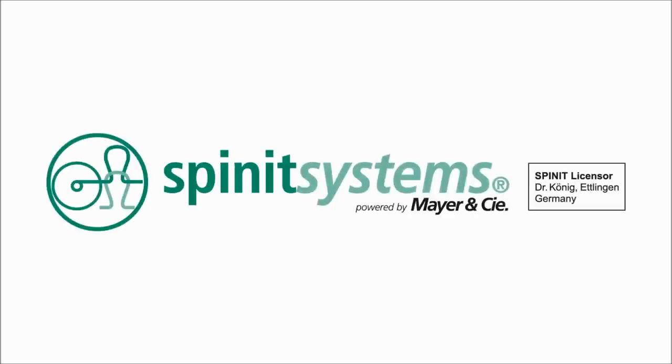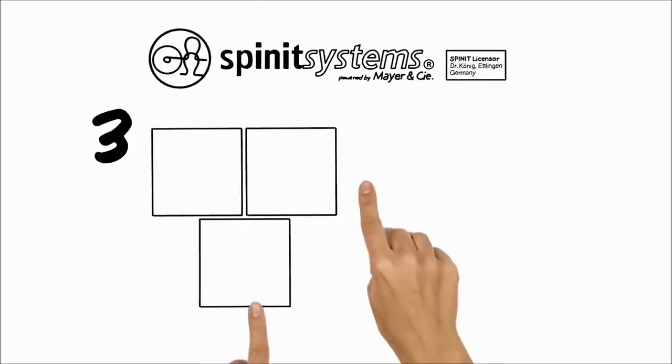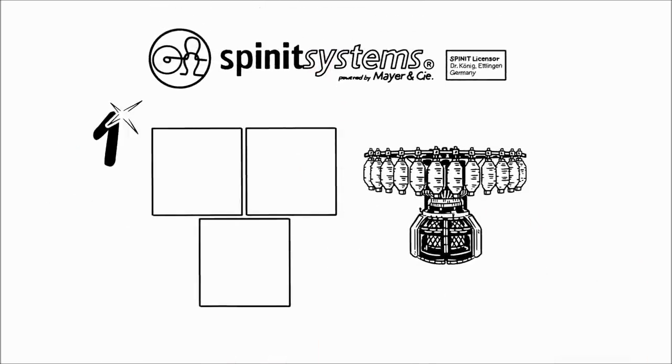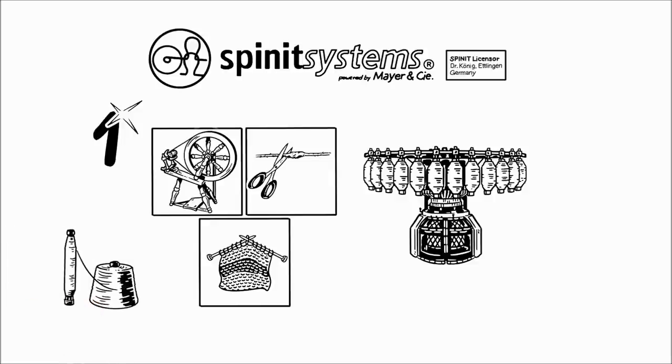We explain Spinet Systems, genuine innovation for the textile industry. Spinet Systems combines three processes in one machine. Not only is Spinet excellent at spinning and cleaning, it even knows how to knit. Rewinding is no longer necessary.